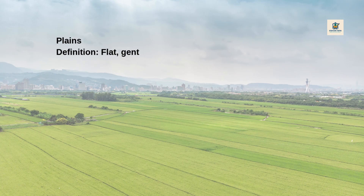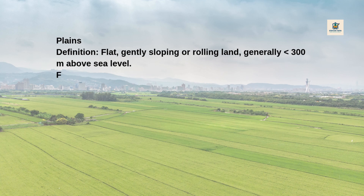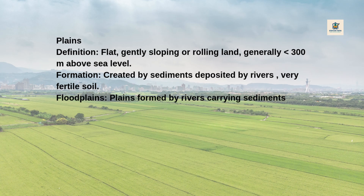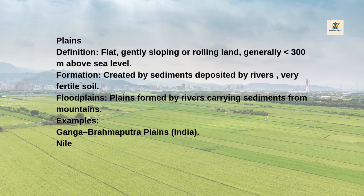Plains: Definition — Flat, gently sloping or rolling land, generally less than 300 metres above sea level. Plains are created by sediments deposited by rivers, producing very fertile soil. Floodplains are plains formed by rivers carrying sediments from mountains. Examples include the Ganga-Brahmaputra Plains (India), Nile Plains (Africa), and Mississippi Plains (USA).